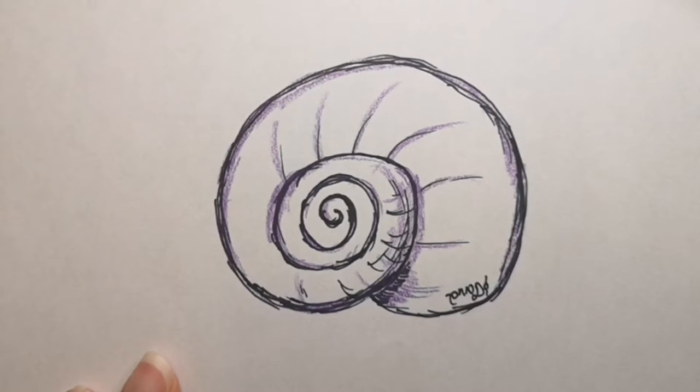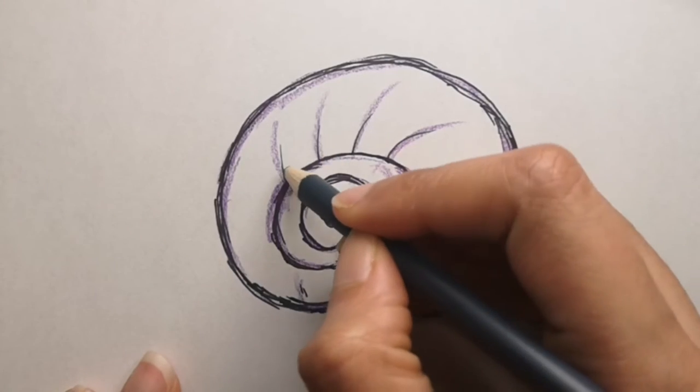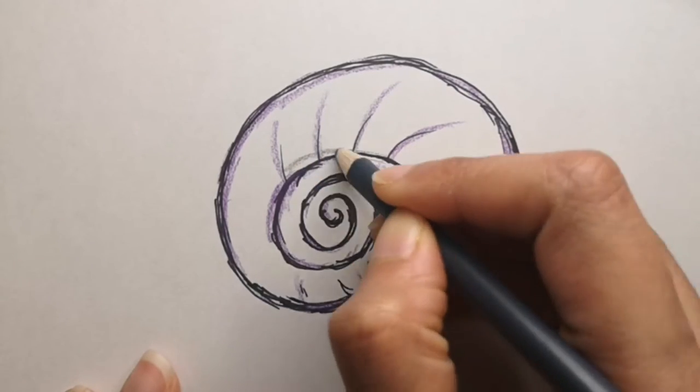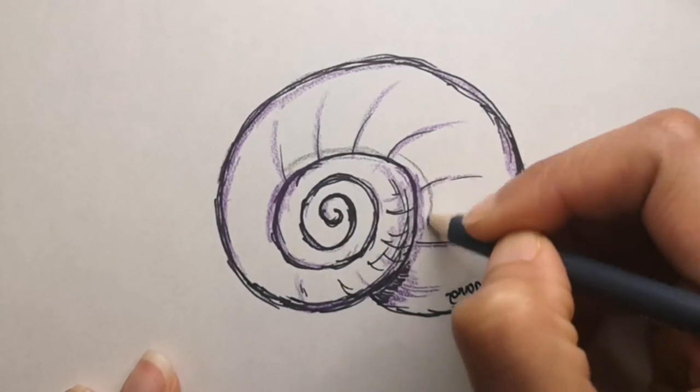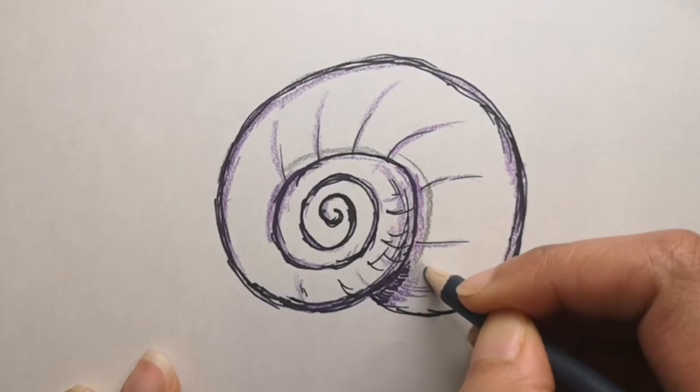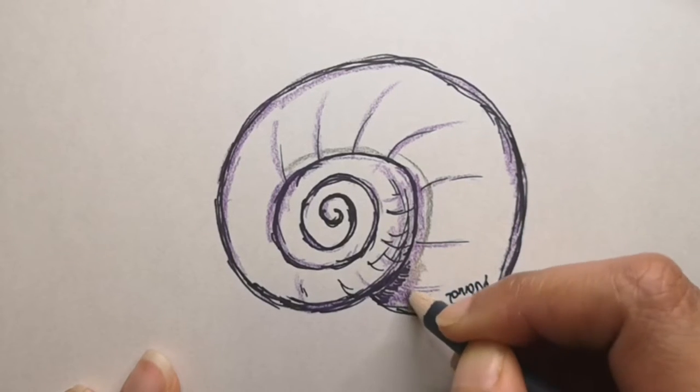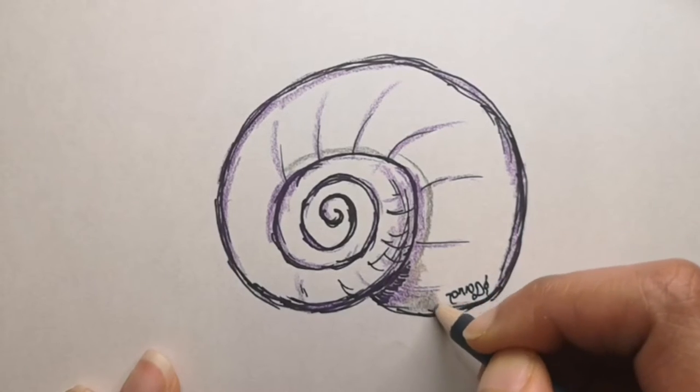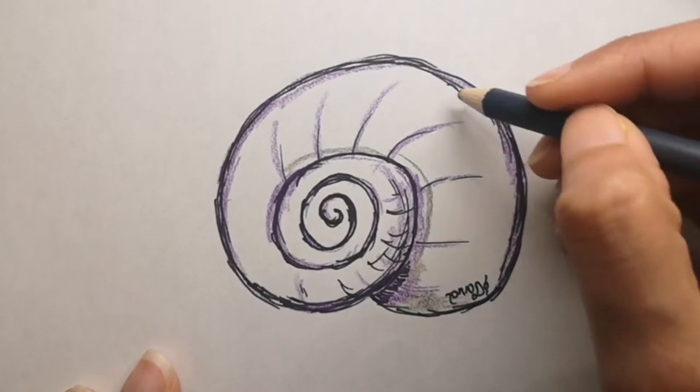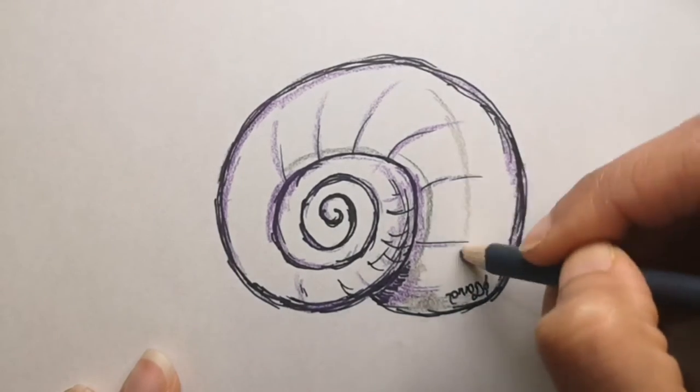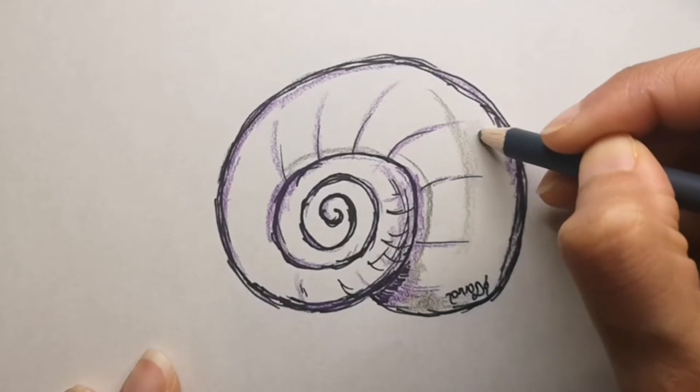Elaborate shells come from the tropics where predation is fierce. Geerat Vermeij, professor of paleoecology at UC Davis and author of A Natural History of Shells, believed that mollusks in the tropics evolved these ornaments to ward off predators.